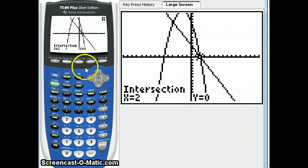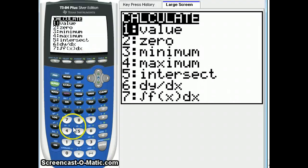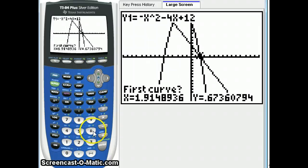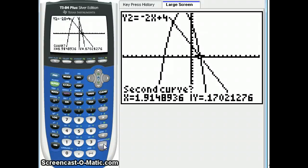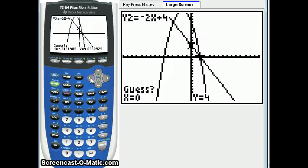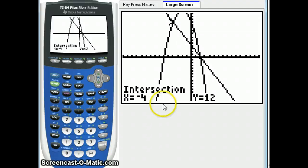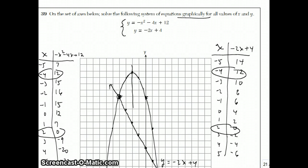If I go again, second, calc, intersect. I hit enter twice to select the two curves. But now when it says guess, I'm going to move over to this other intersection point. Hit enter. And it tells me negative 4, 12. So we can do it that way also.